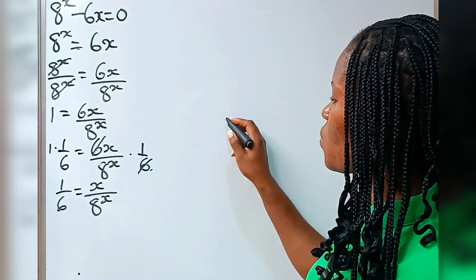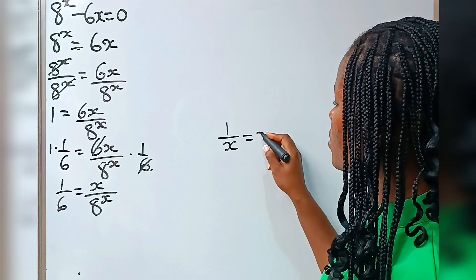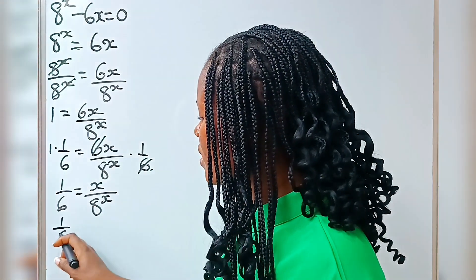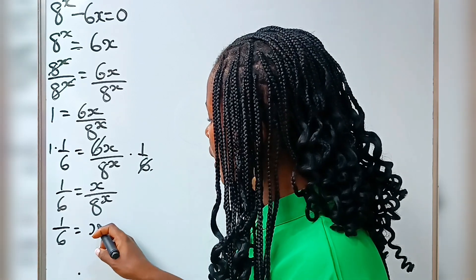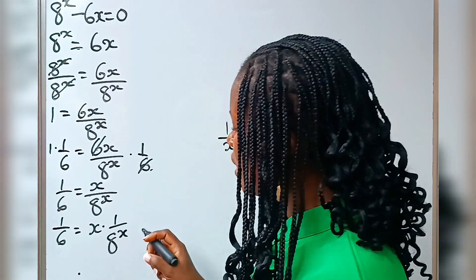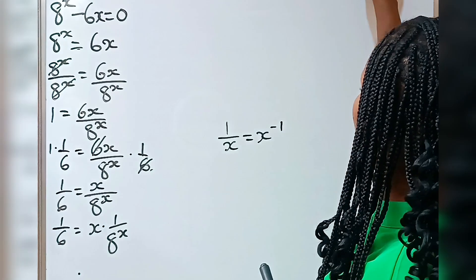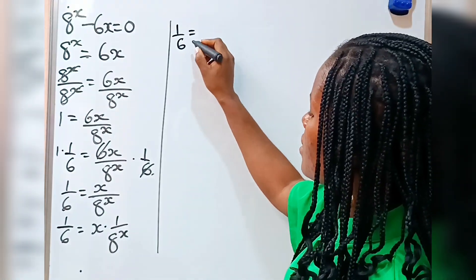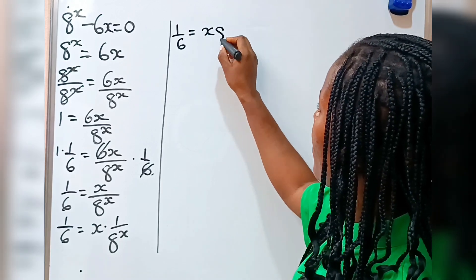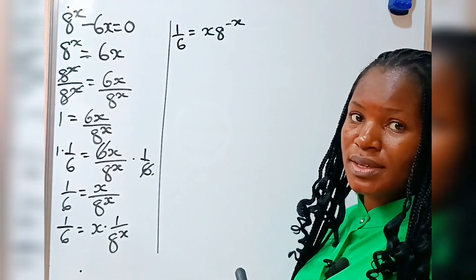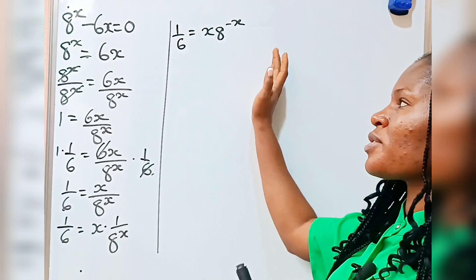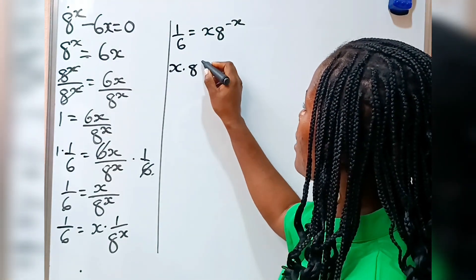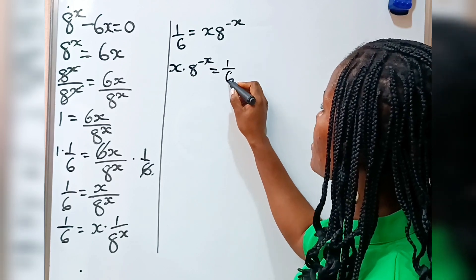Note that 1 over x is equal to x to the power of minus 1. Therefore, we can write this as 1 over 6 is equal to x multiplied by 1 over 8 to the power of x, which gives us x multiplied by 8 to the power of minus x is equal to 1 over 6.